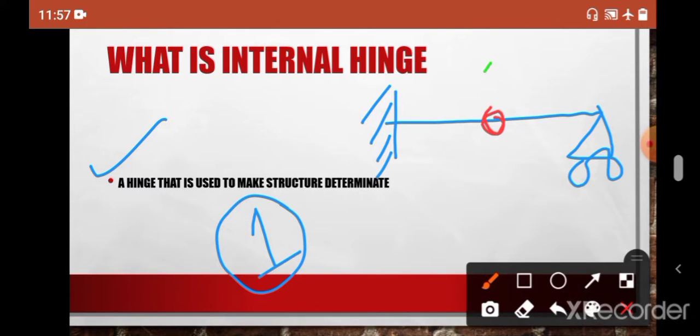First you analyze this one, then you find the reaction here and then apply that reaction in this cantilever part. You separately analyze this cantilever part with the reaction which is coming in this support.